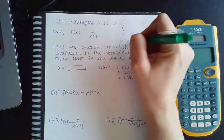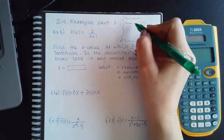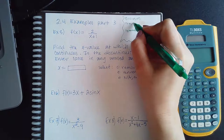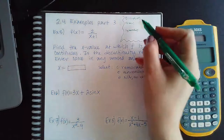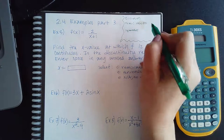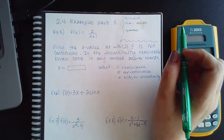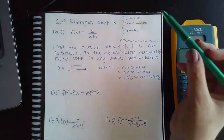Going back to algebra, the domain is usually negative infinity to infinity unless you have a fraction — what we call a rational function — or a radical, such as a square root function. For a fraction, we know the denominator cannot equal zero, so we remove those values from the typical domain of negative infinity to infinity.